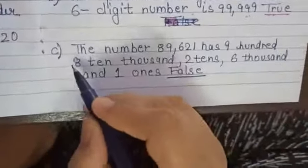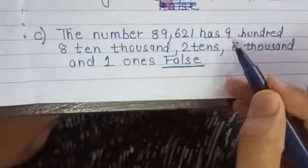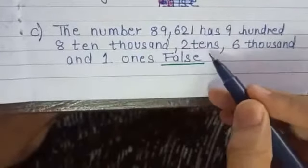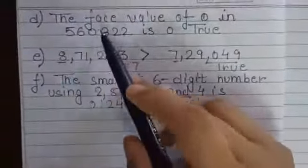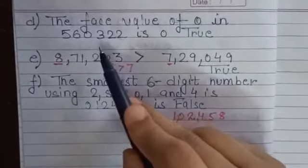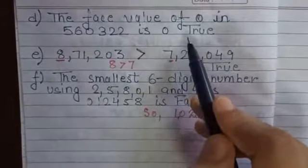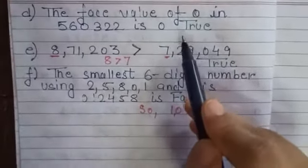Part C: the number 89,621 has 9 hundreds, 8 ten-thousands, 2 tens, 6 thousands, and 1 one — this is false. Part D: the face value of 0 in 5,60,322 is 0 — this is true, because the face value of every digit is the digit itself.